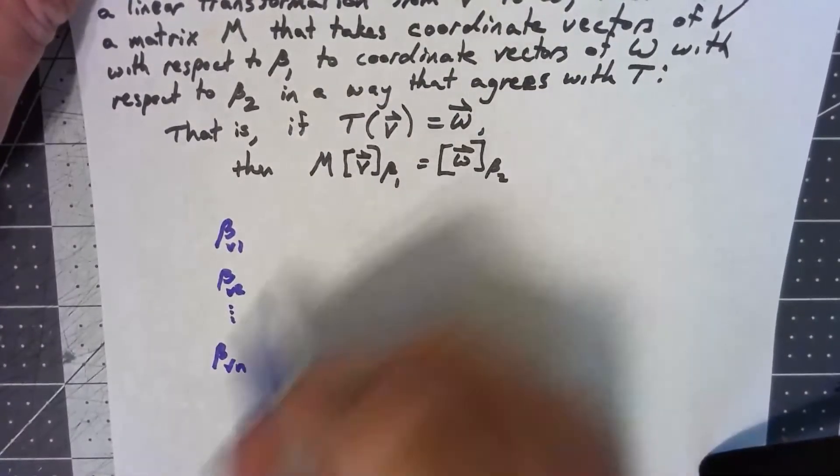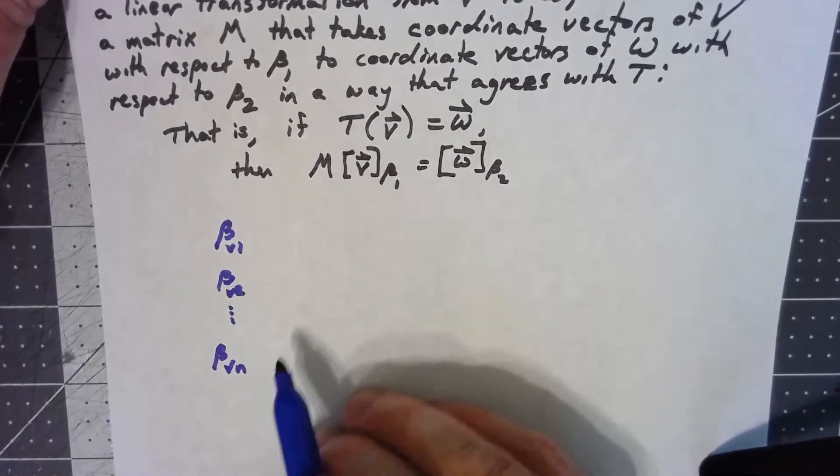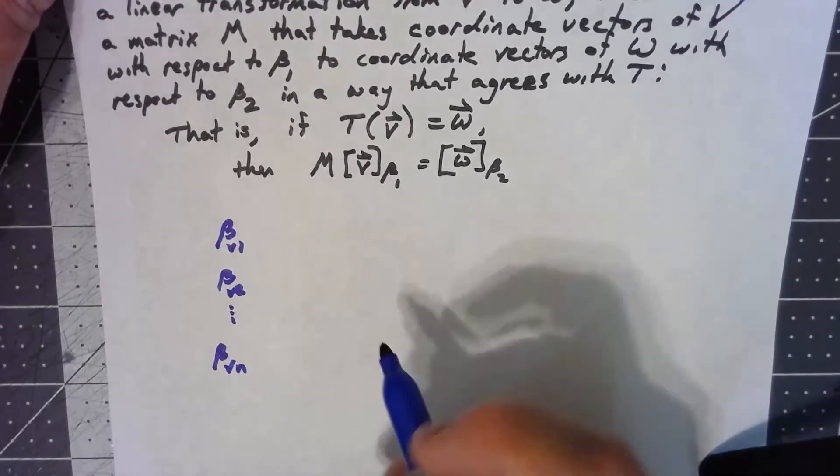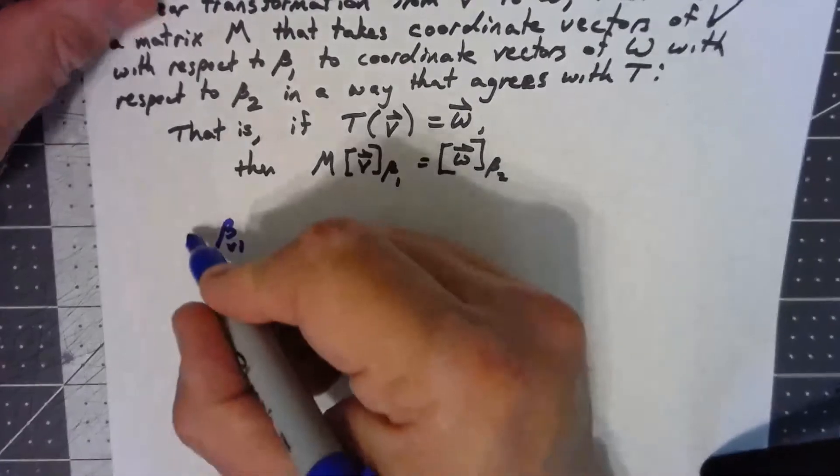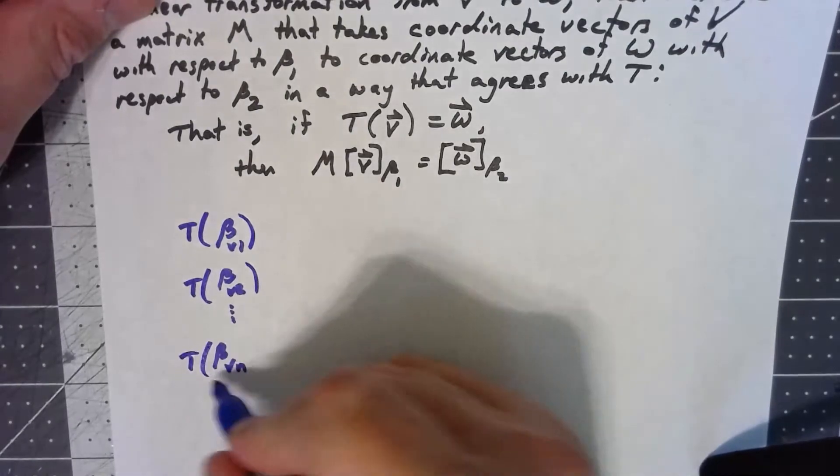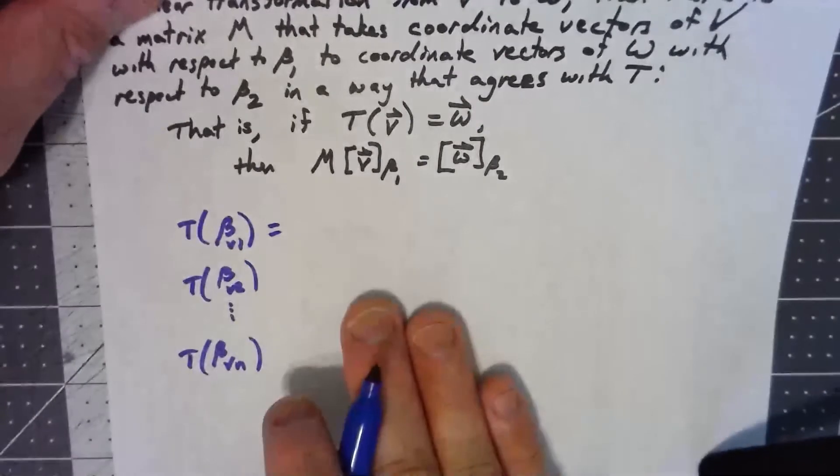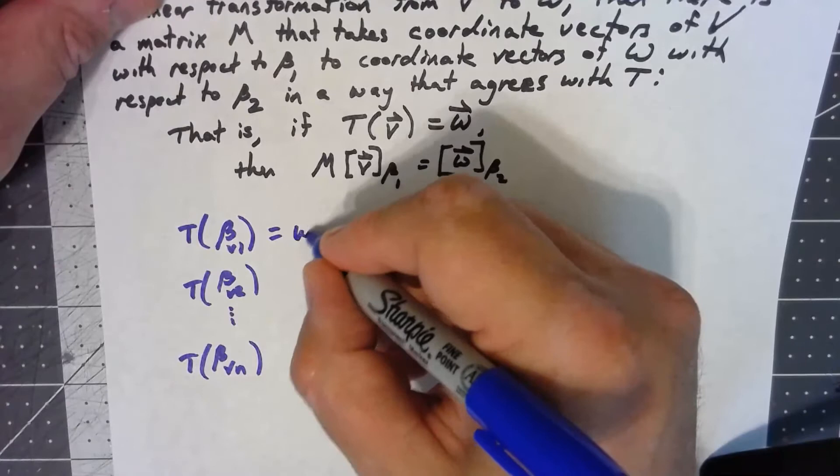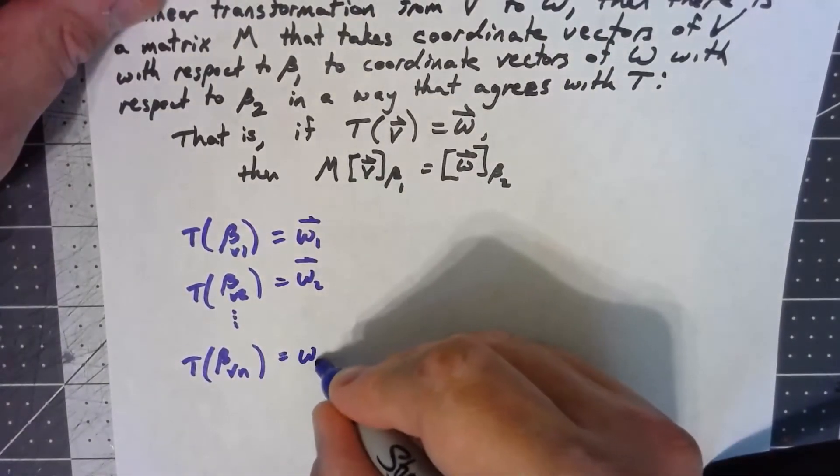These are the basis vectors for V and then we've got another set of basis vectors for W which we'll talk about in a second. Let's start, because these things are basis vectors, they're elements of V. So what happens when I take the linear transformation of them? Well I don't necessarily get the basis vectors of W, but I do get elements of W. So I'll just call these things W1 vector, W2 vector, Wn vector.